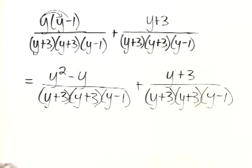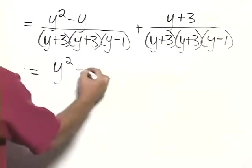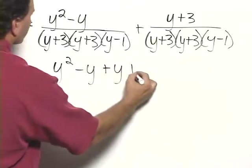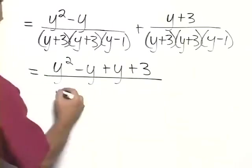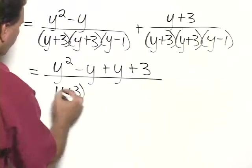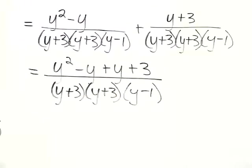We can now add those numerators together, y squared minus y plus y plus 3, all over the LCD of y plus 3 times y plus 3 times y minus 1.